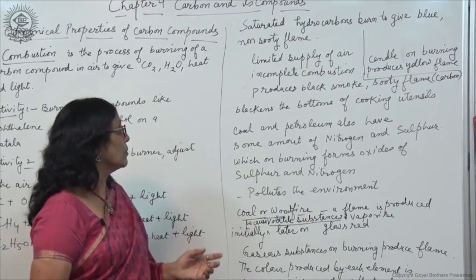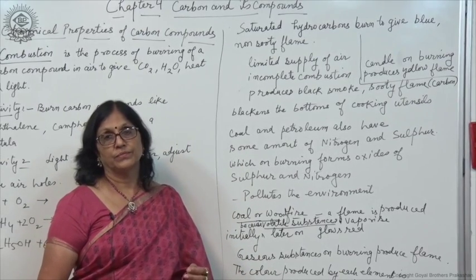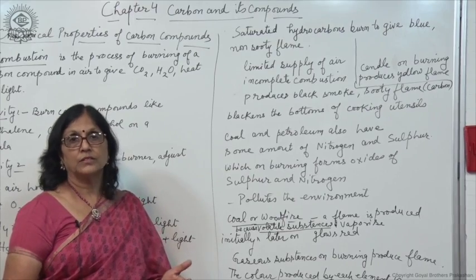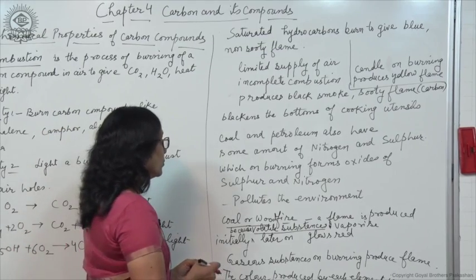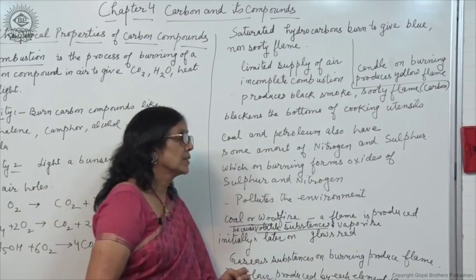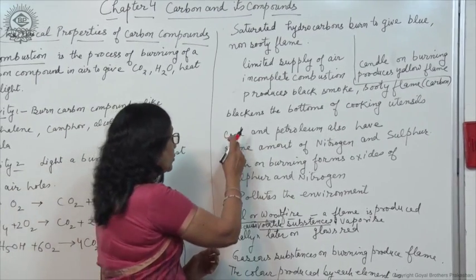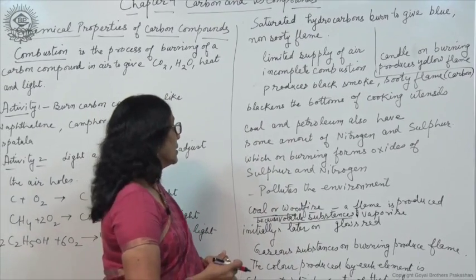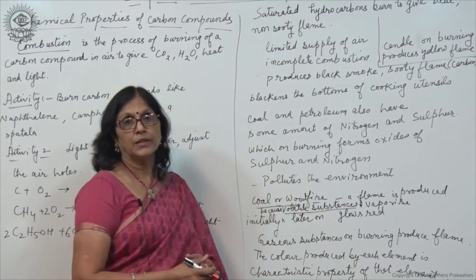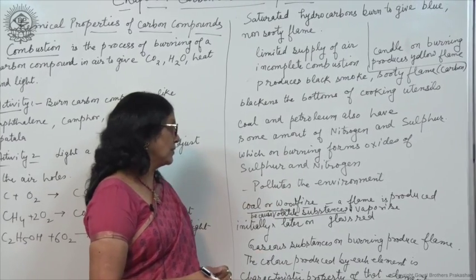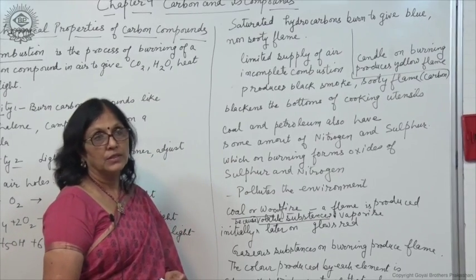Whereas unsaturated hydrocarbons burn in air to give a smoky, sooty flame even if the supply of air is in excess. Coal and petroleum also burn in air and produce a flame for some time. They have some amount of nitrogen and sulphur, which when burnt in air produce oxides of nitrogen and sulphur. These oxides of nitrogen and sulphur pollute the environment and cause pollution.